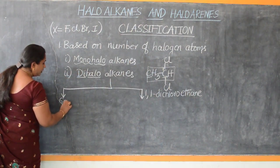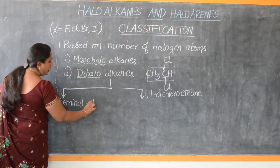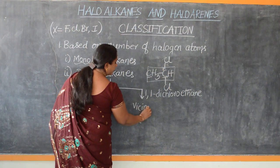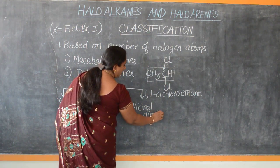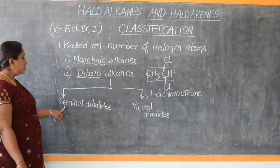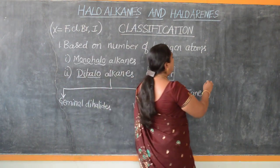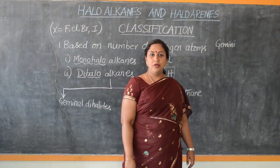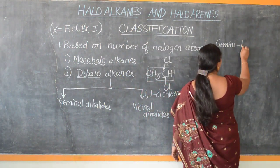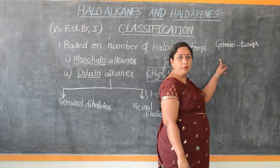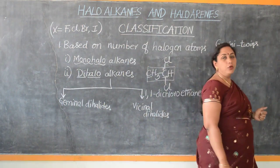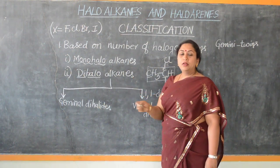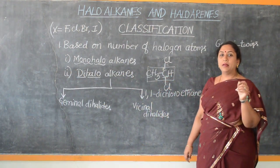The two types are geminal di-haloalkanes and vicinal di-haloalkanes. The term geminal di-haloalkanes is derived from the Latin word 'Gemini', which means twins. It means they are dihaloalkanes wherein two halogen atoms are attached to the same carbon atom.